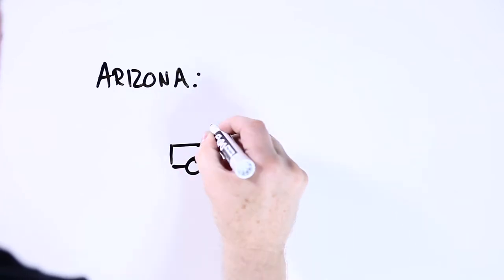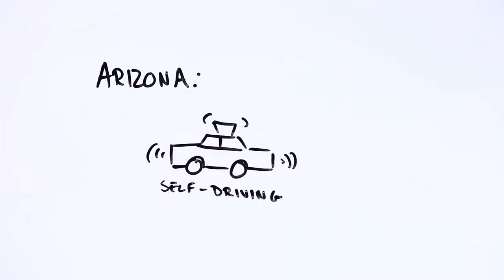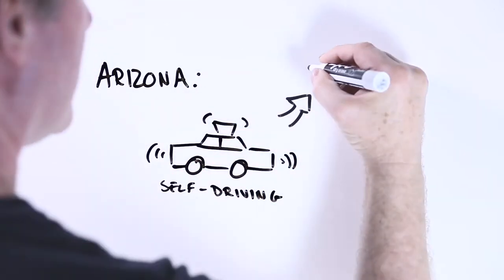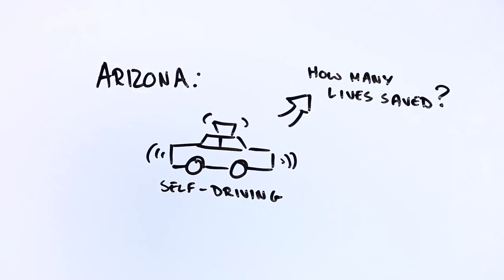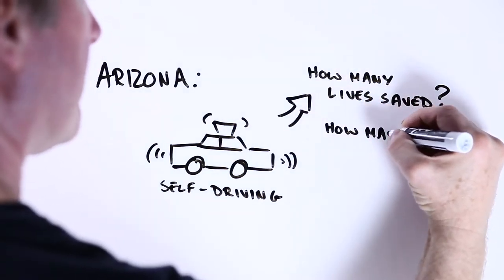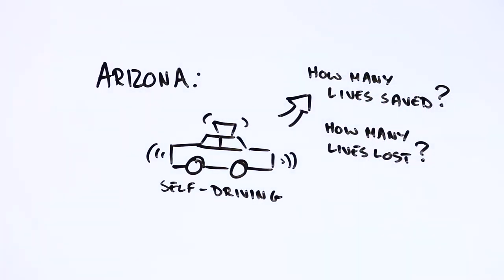Imagine what these figures would look like if 30% of those vehicles on the road were driving themselves. There's a chance that around 90 lives a year could be saved, as long as the self-driving technology was completely safe. But what if it wasn't? What if these autonomous vehicles also ended up killing some people who otherwise would still be alive? In this case, how do we work out what acceptably safe means?